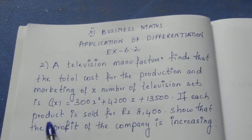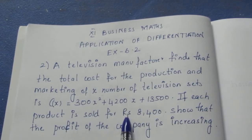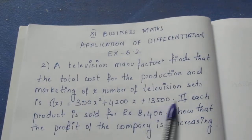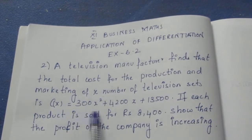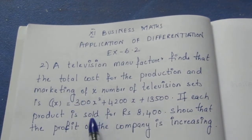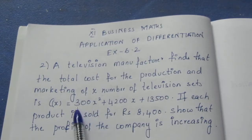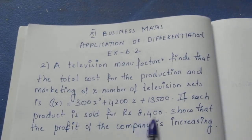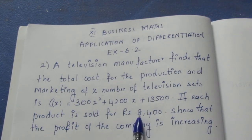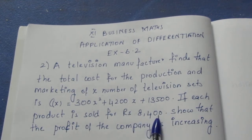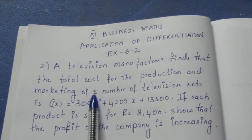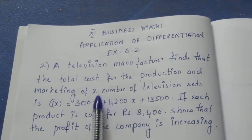If each product is sold for Rs. 8400, that is the selling price of one TV. But there are X number of TVs, so we can find the total selling price.